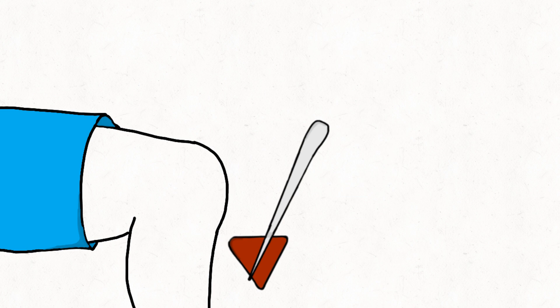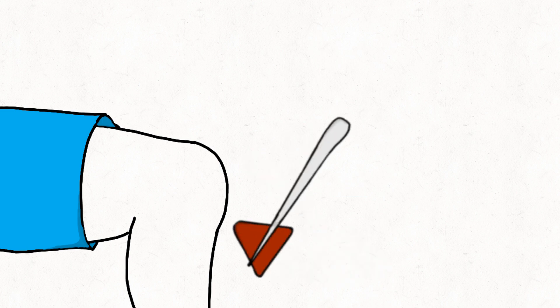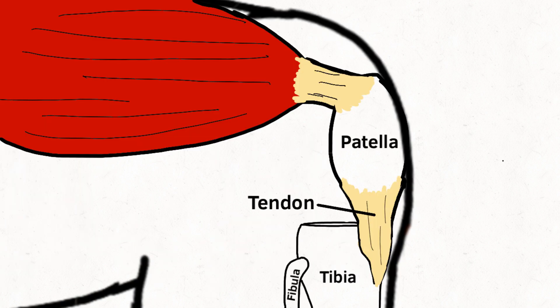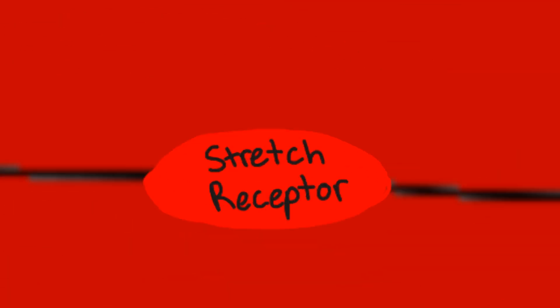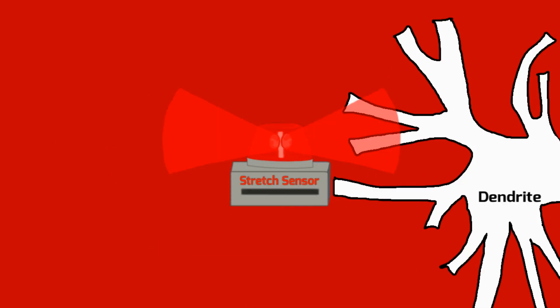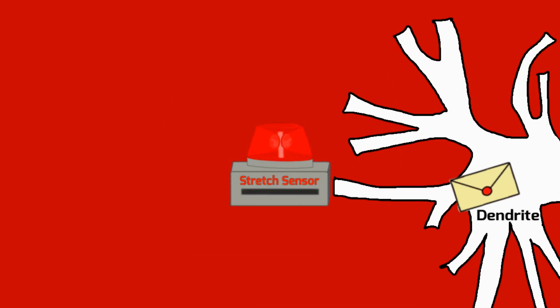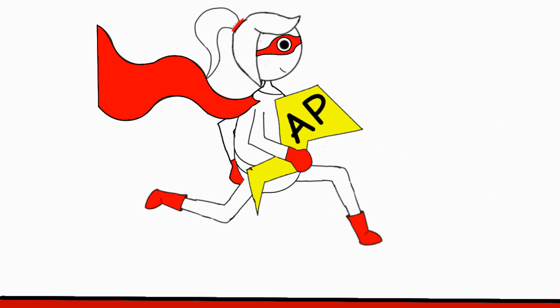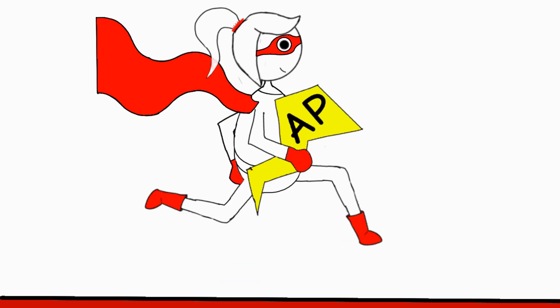For example, when a doctor taps your knee, they are actually tapping the tendon located below the kneecap, which is also called the patella. This causes the stretch receptor in the muscle to activate. The stretch receptor sends a message to the dendrite of the sensory nerve, and an action potential is generated and sent down the axon.